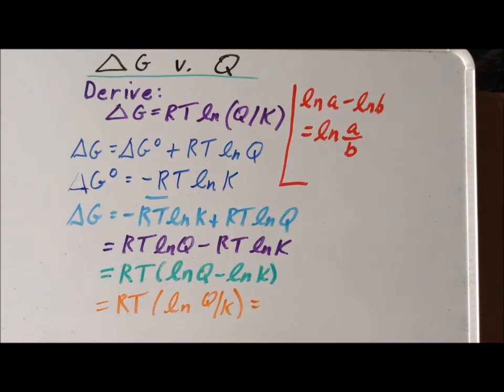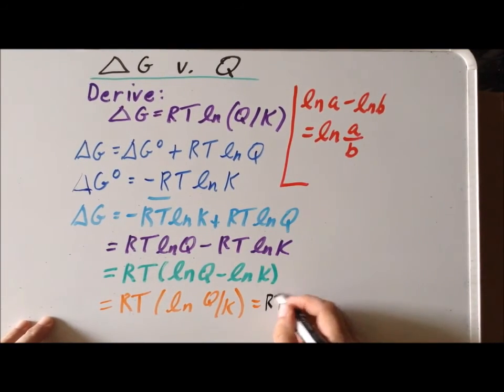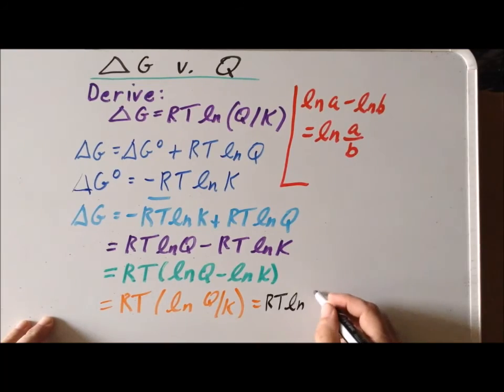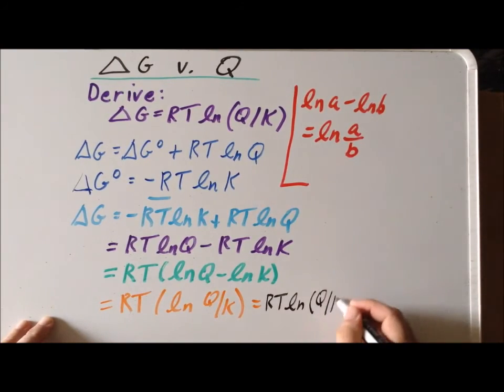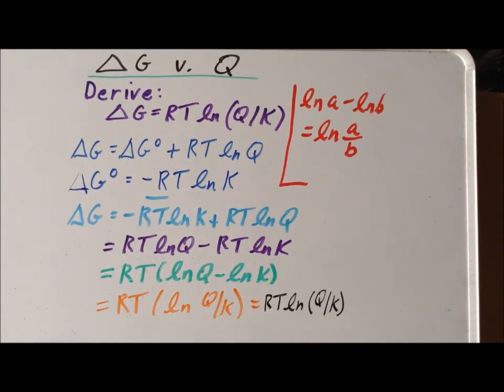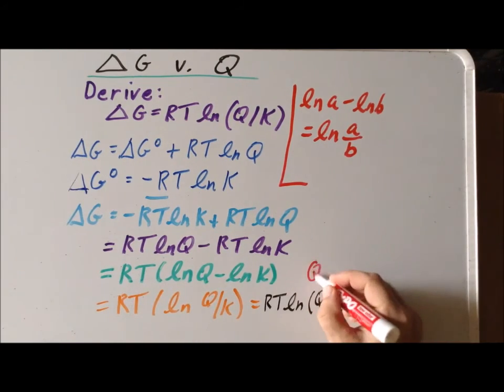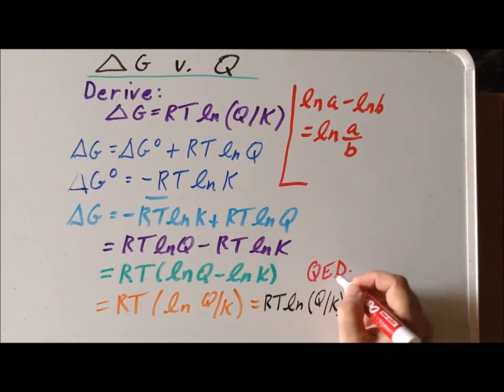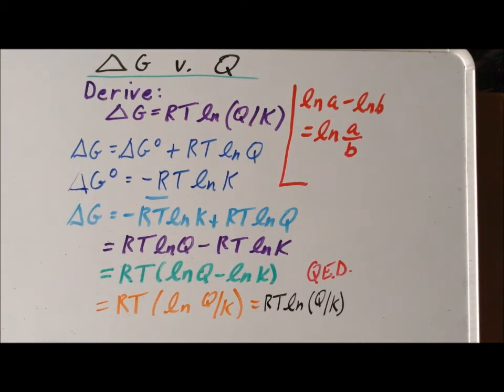Now we simply rearrange where you put the parentheses to give RT times the natural log of Q divided by K, and this is what we wanted to prove.